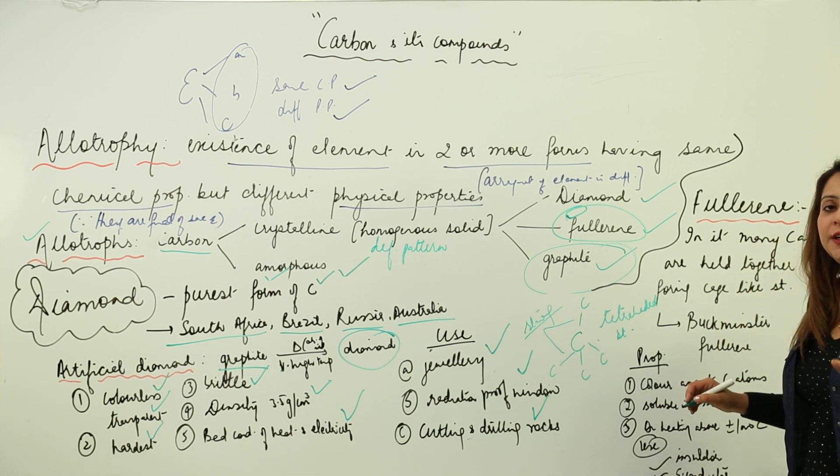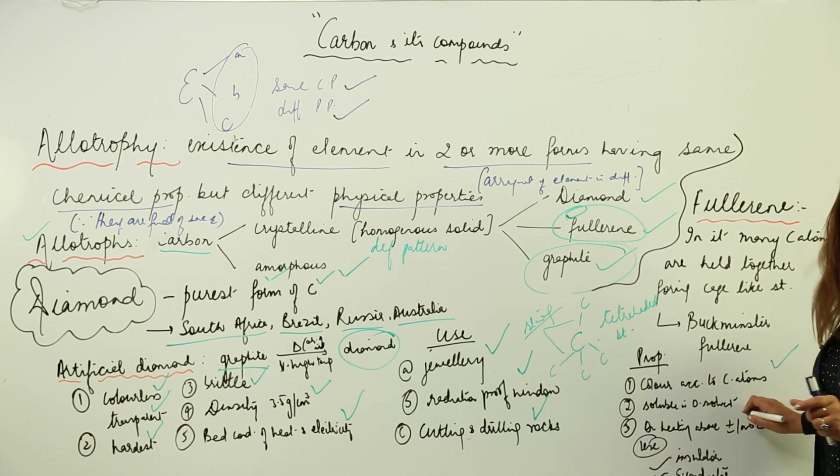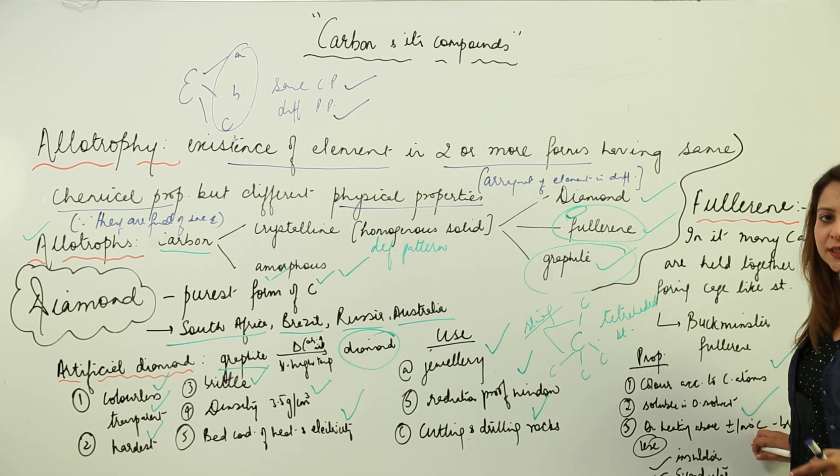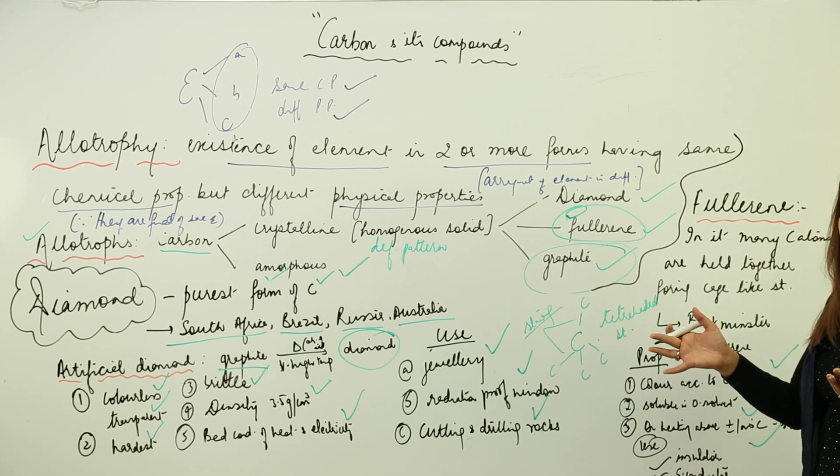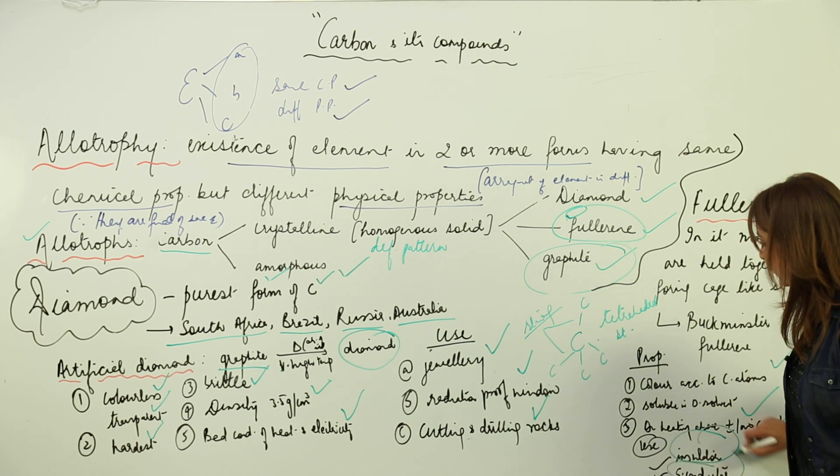Moreover, it is soluble in organic solvents. And if we heat it above or below thousand degrees Celsius, the cage actually breaks and the carbon atoms start getting separated. It is used as an insulator and in some cases it is used as a superconductor also.